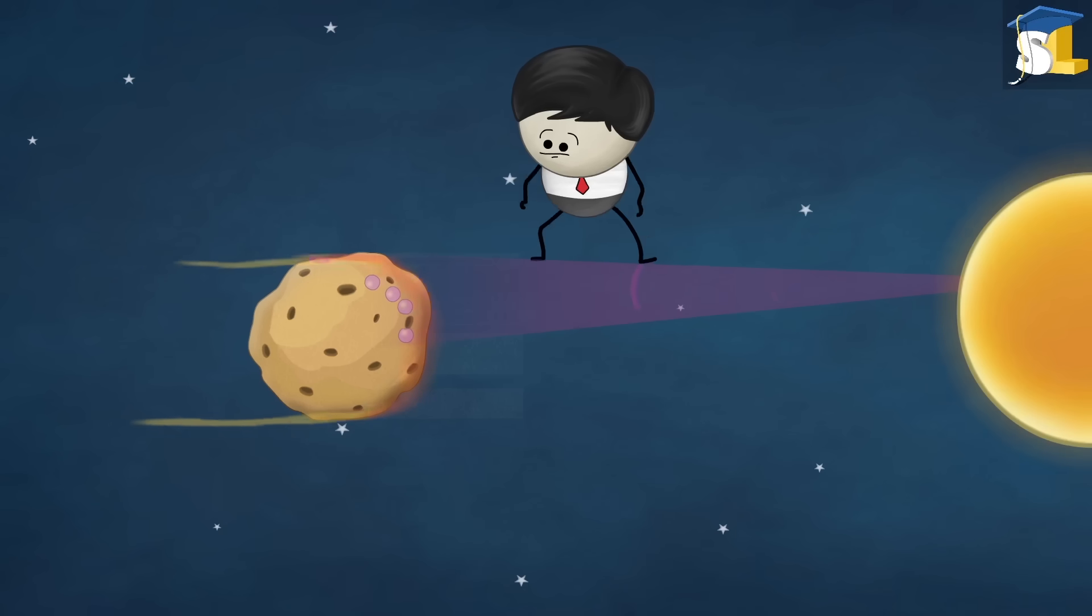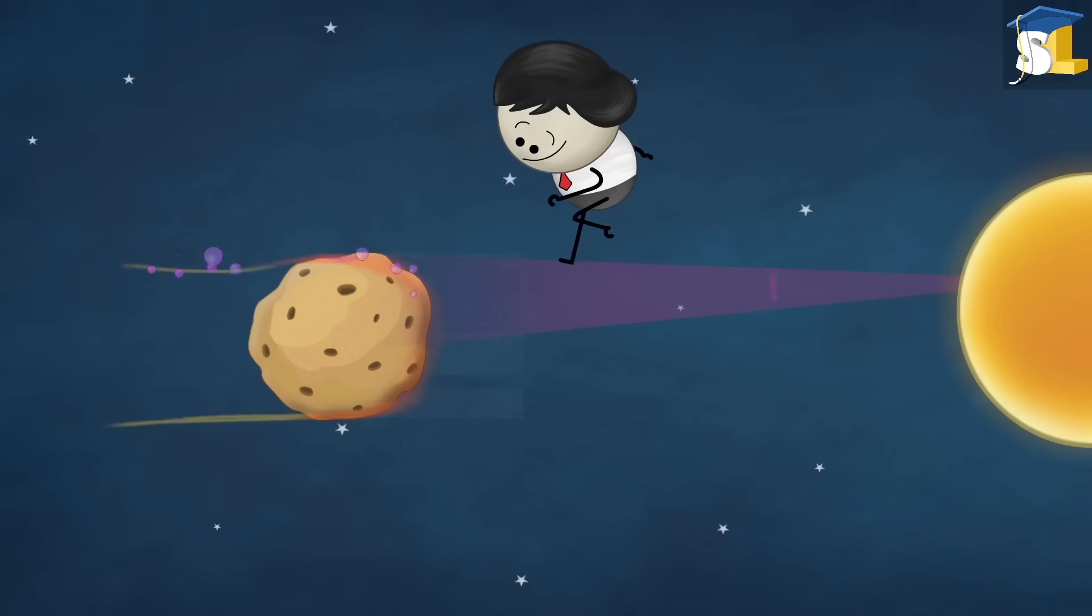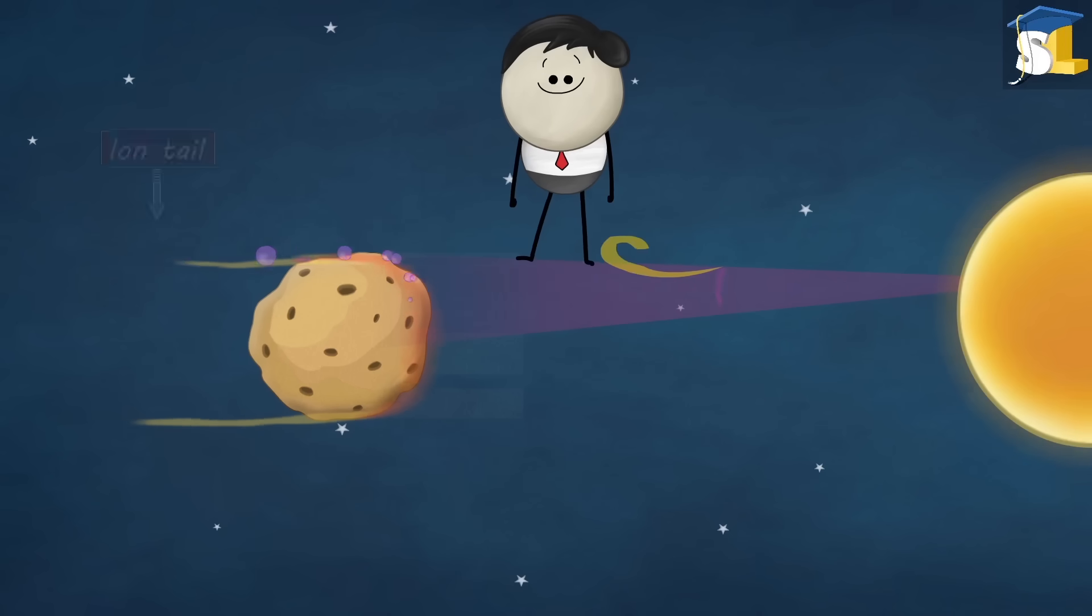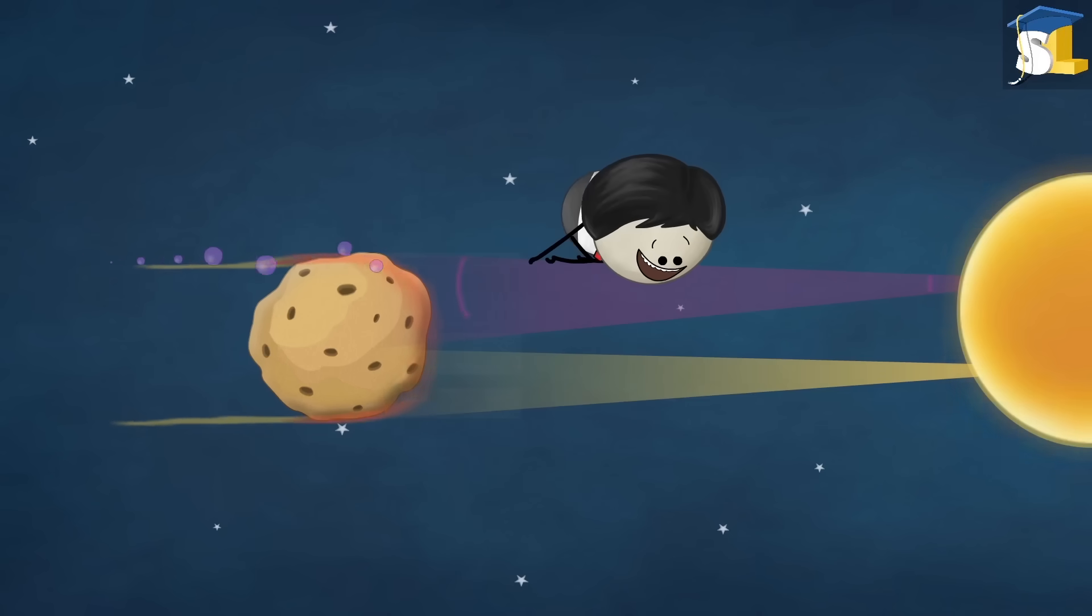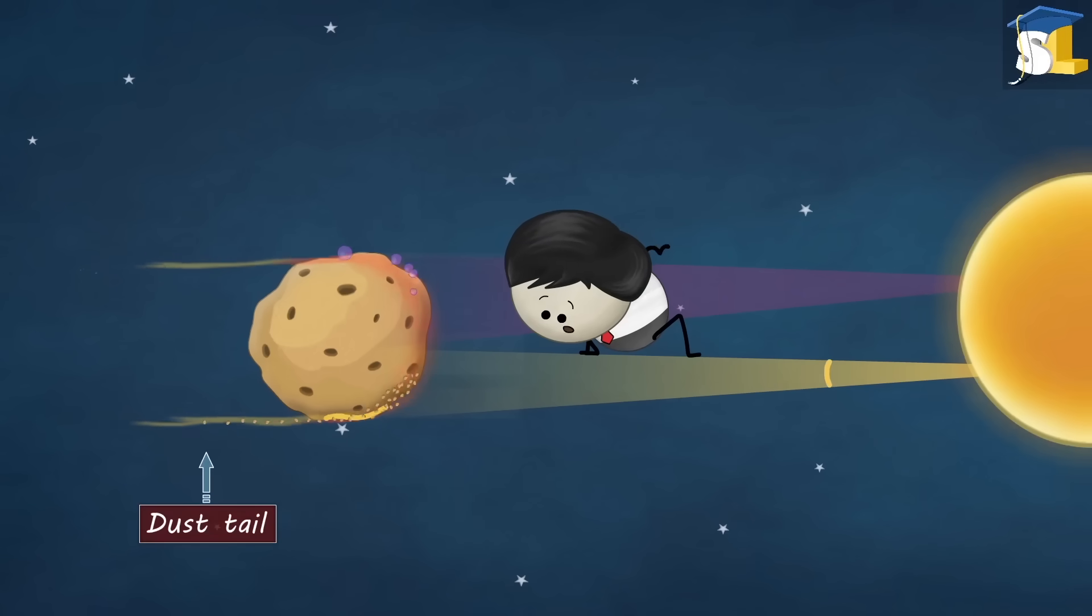The ultraviolet radiations from the sun ionize the gas and the solar wind carries this ionized gas away from the sun, forming an ion tail. Whereas, the light from the sun exerts pressure on the dust particles and pushes them away, creating a dust tail.